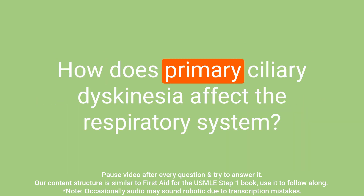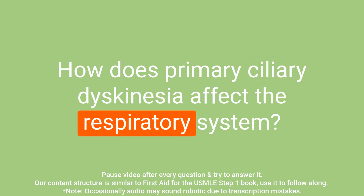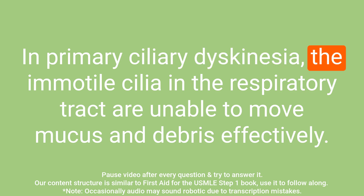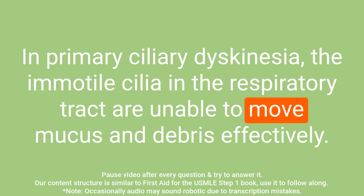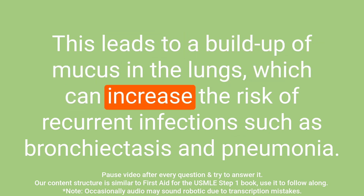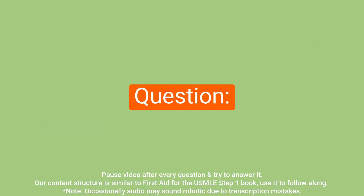Question: How does primary ciliary dyskinesia affect the respiratory system? Answer: In primary ciliary dyskinesia, the immotile cilia in the respiratory tract are unable to move mucus and debris effectively. This leads to a buildup of mucus in the lungs, which can increase the risk of recurrent infections such as bronchiectasis and pneumonia.